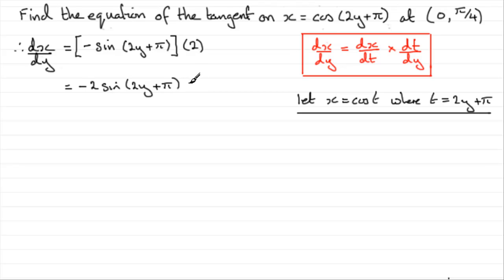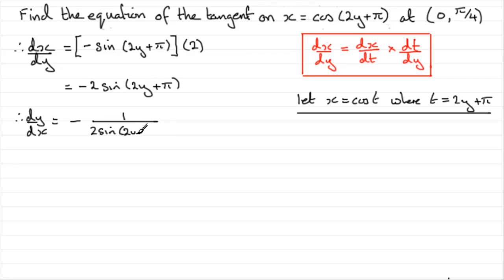So that's dx by dy equal to minus 2 sine of 2y plus π. We want dy by dx, so all we need to do is invert this. We can say that dy by dx equals minus 1 all over 2 sine of 2y plus π, putting the minus out the front of the fraction. This gives us the gradient at any point x or y on the curve.